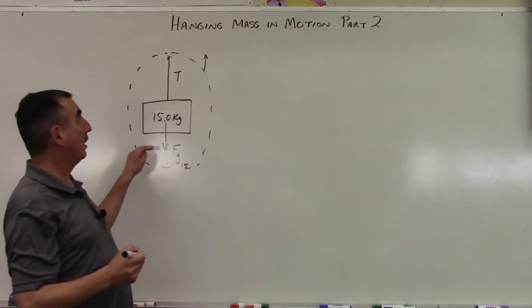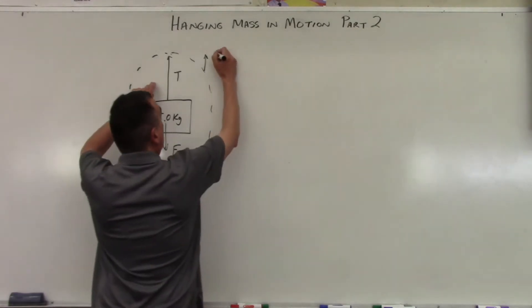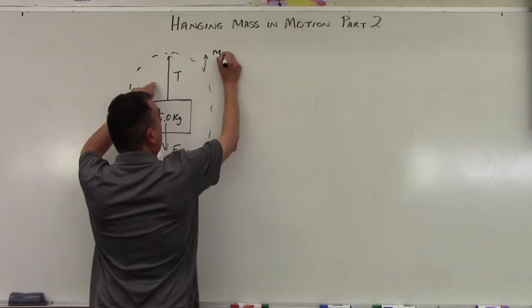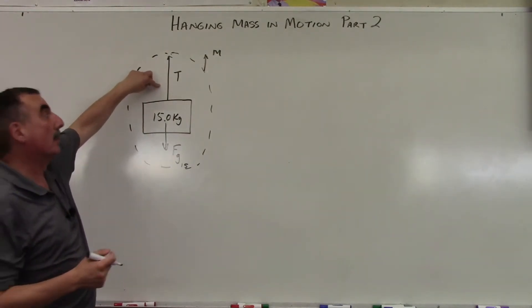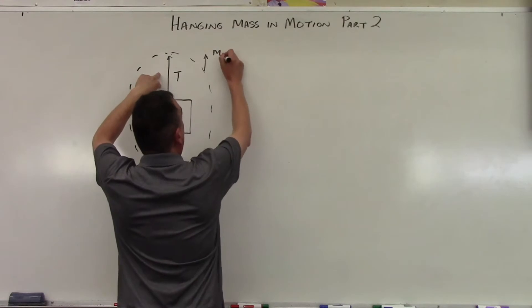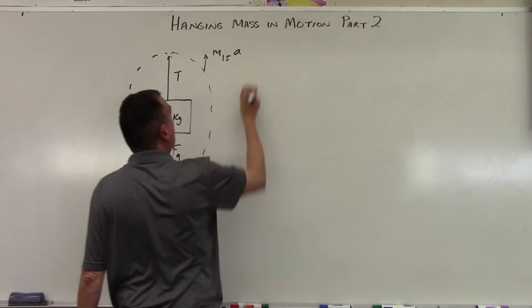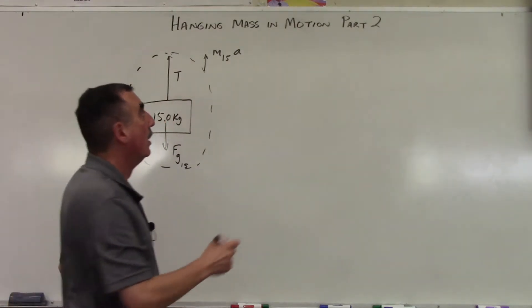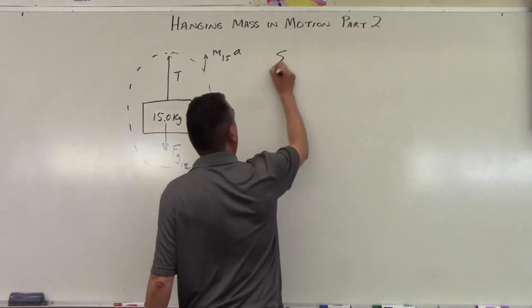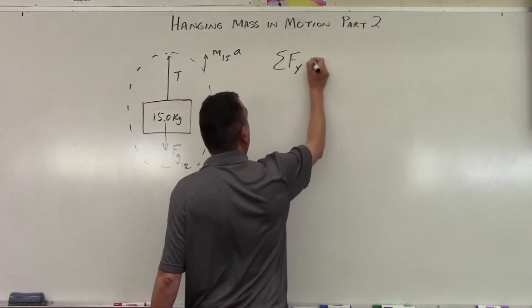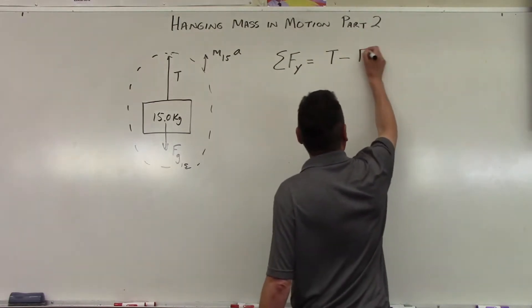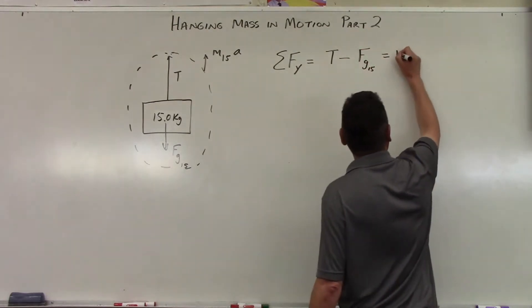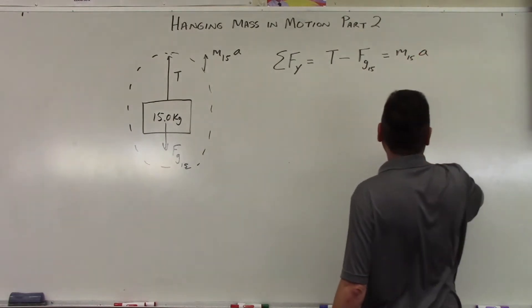Therefore, it's going to have a sum of forces, a net force that's going to be equal to the mass of the object. And we're assuming that the string, or the cord, is massless for this exercise. So mass of 15, the mass of the object times the acceleration of the whole system. So the sum of forces in y is going to be equal to T minus Fg sub 15 equals the mass of 15 times a, the acceleration.